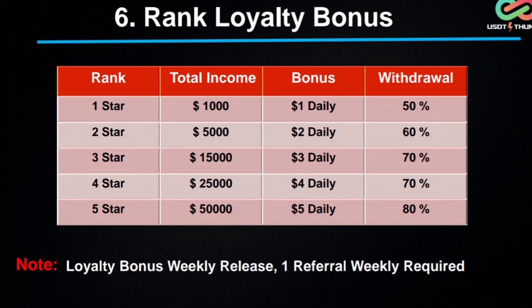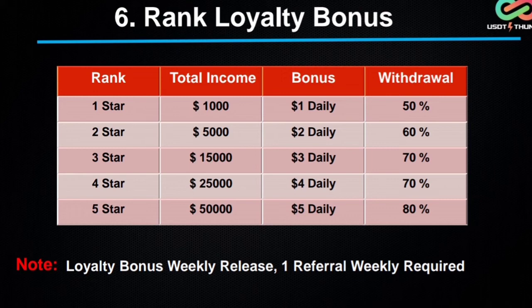Next: rank loyalty bonus. Here you can see five types of rank in this company — first star to five star. In first star, your income is $1,000 and you can get $1 bonus daily, with 50% withdrawal. In second star, income is $5,000 and you can get 2% daily bonus, with 60% withdrawal. In third star, income is $15,000 and $3 daily bonus, with 70% withdrawal. In fourth star, $4 daily. In fifth star, $5 daily.